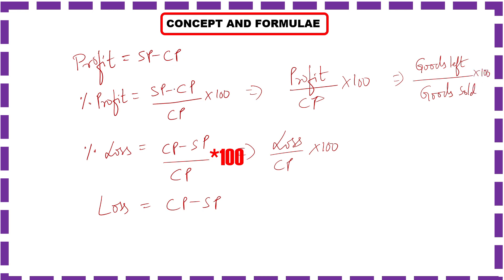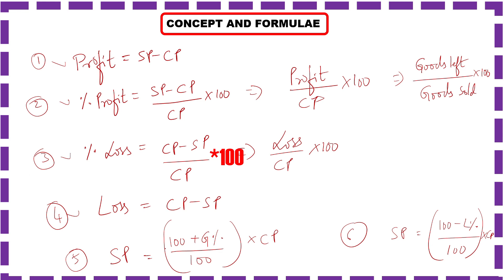We will solve each and every problem using all these formulae so that you can learn how to apply them. Selling price = (100 + gain%) / 100 × cost price. Selling price = (100 − loss%) / 100 × cost price. The first formula is for gain percentage, and the second is for loss percentage. Please make note of these six formulae.